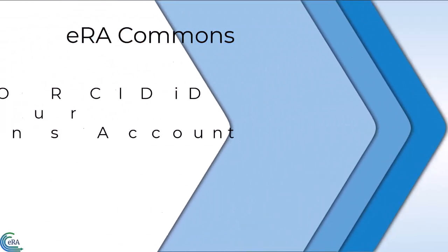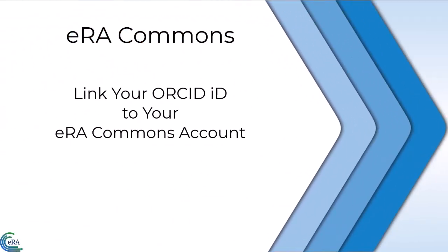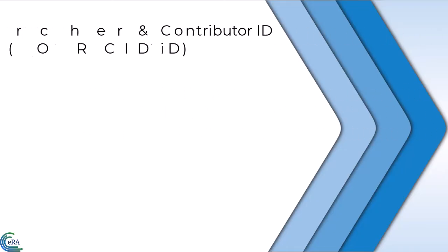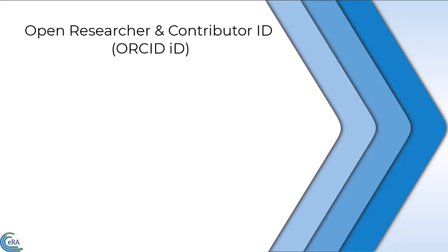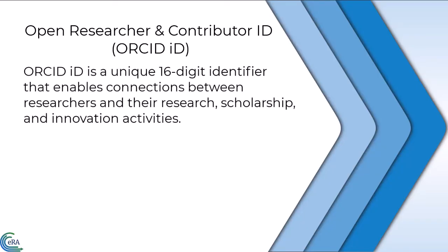Welcome to this video tutorial on creating an ORCID ID and associating it with your eRA Commons account. The Open Researcher and Contributor ID, or ORCID ID, is a unique 16-digit identifier that enables connections between researchers and their research, scholarship, and innovation activities.